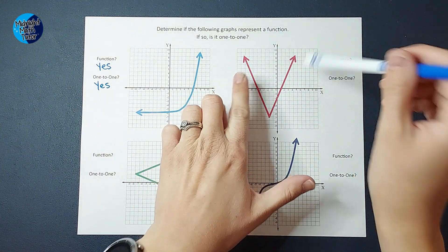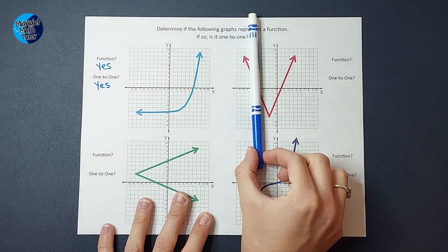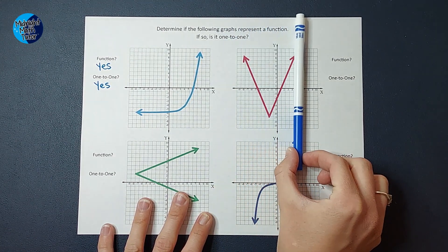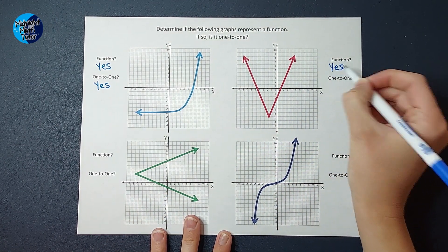Now we're going to look at this V. Is this a function? I'm going to do my vertical line test, it's looking good. It only hit one point at a time. It is, yes, a function.